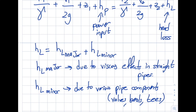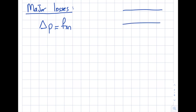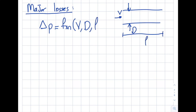Let's start with major losses. I'll take a similar approach to the laminar flow analysis. For a straight pipe with constant diameter, the head loss will be a function of velocity V, diameter D, and the length L of the pipe.